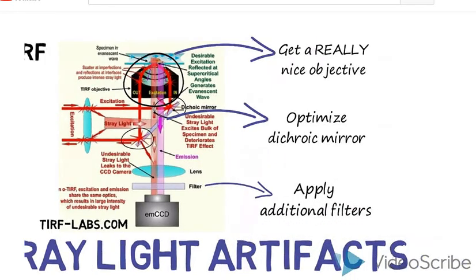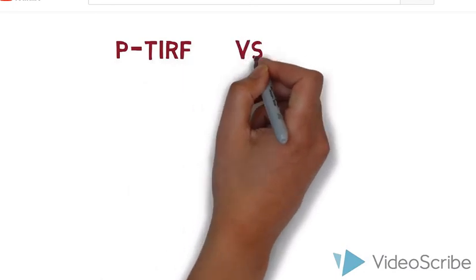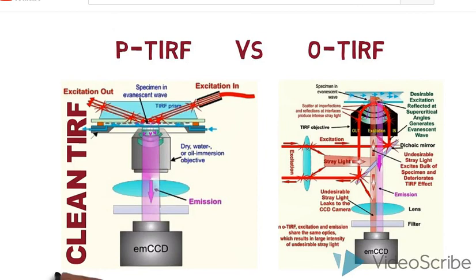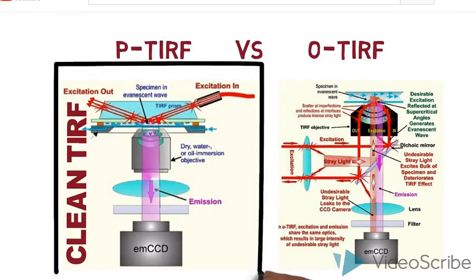However, P-TIRF is often described to have a clean TIRF and better signal-to-noise ratio in comparison to O-TIRF because of its natural lower stray light interference.